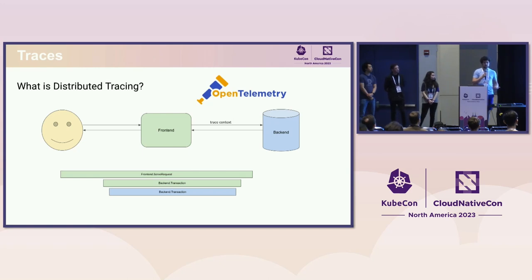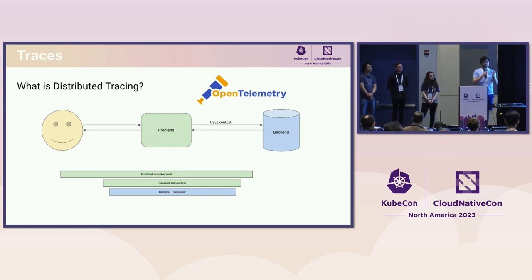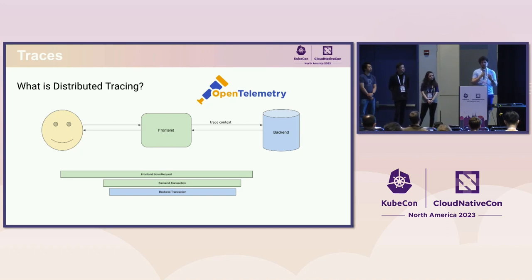You'd like to be able to combine those into a single view for a particular request to get context around what was going on — what made it fast or slow, et cetera. In order to do that, distributed tracing generates and attaches an ID to a specific request, called a trace context. It's a W3C standard. That way, the frontend when it writes telemetry can attach that ID, and so can the backend, and then at the end you can group by it to reconstruct this tree.